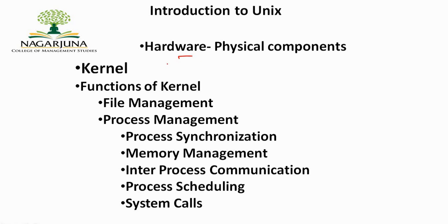The other important component of Unix is the kernel, which is considered the core of the operating system containing a collection of programs and routines written in C. When a system is booted, the kernel gets loaded into memory by the bootstrap program and directly communicates with hardware components. The functions of the kernel include file management, process management, and system calls.